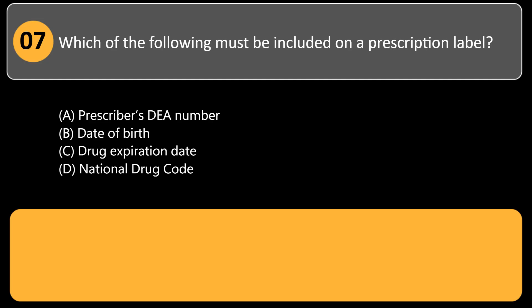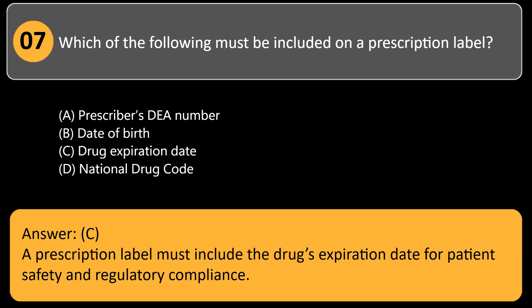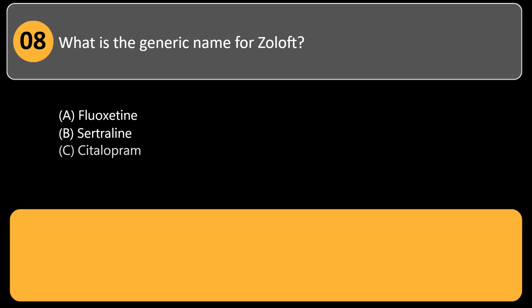Which of the following must be included on a prescription label? A) prescriber's DEA number, B) date of birth, C) drug expiration date, D) national drug code. Answer: C. A prescription label must include the drug's expiration date for patient safety and regulatory compliance.